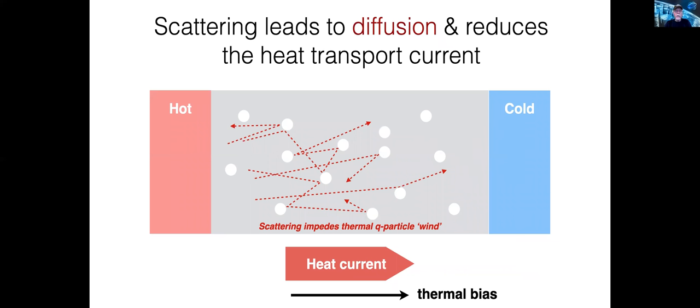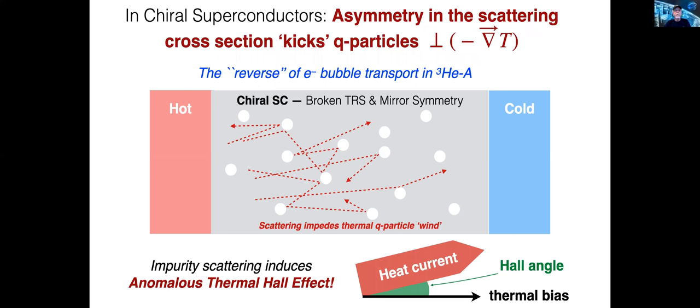Quasi-particle scattering off this random field then, of course, leads to diffusion. And if the medium is chiral, the same mechanism of branch conversion scattering, chiral edge state formation, and skew scattering is at work around each impurity, generating an anomalous thermal Hall current.